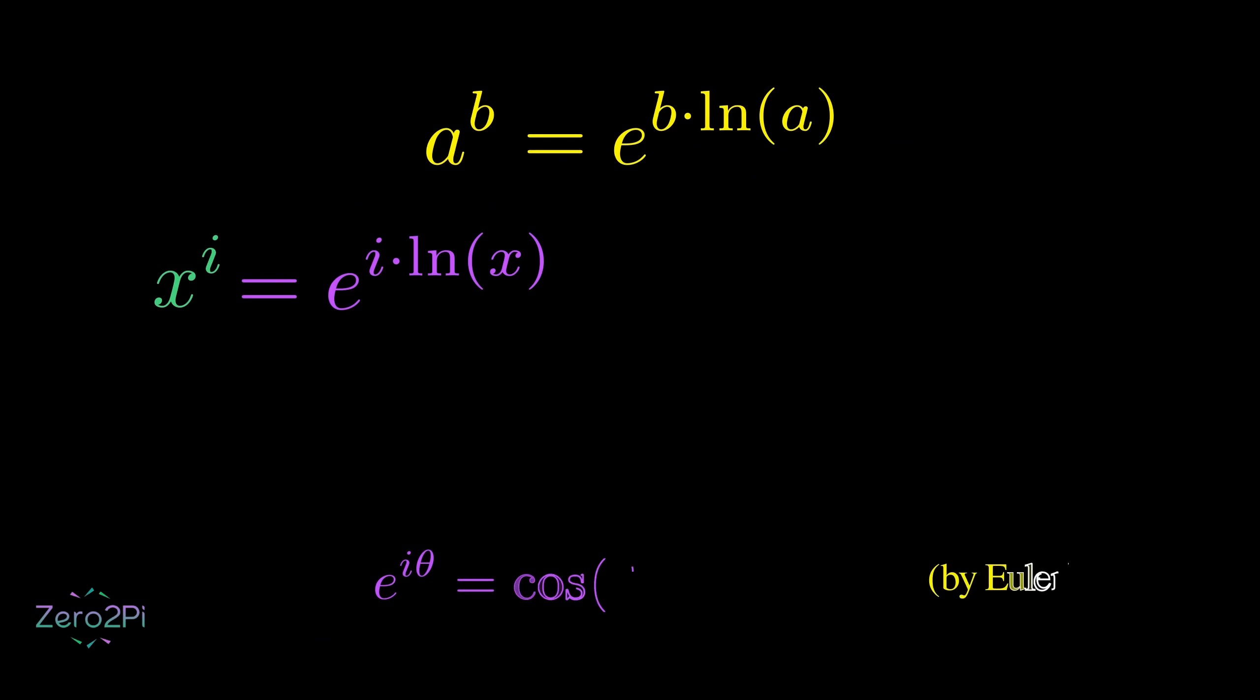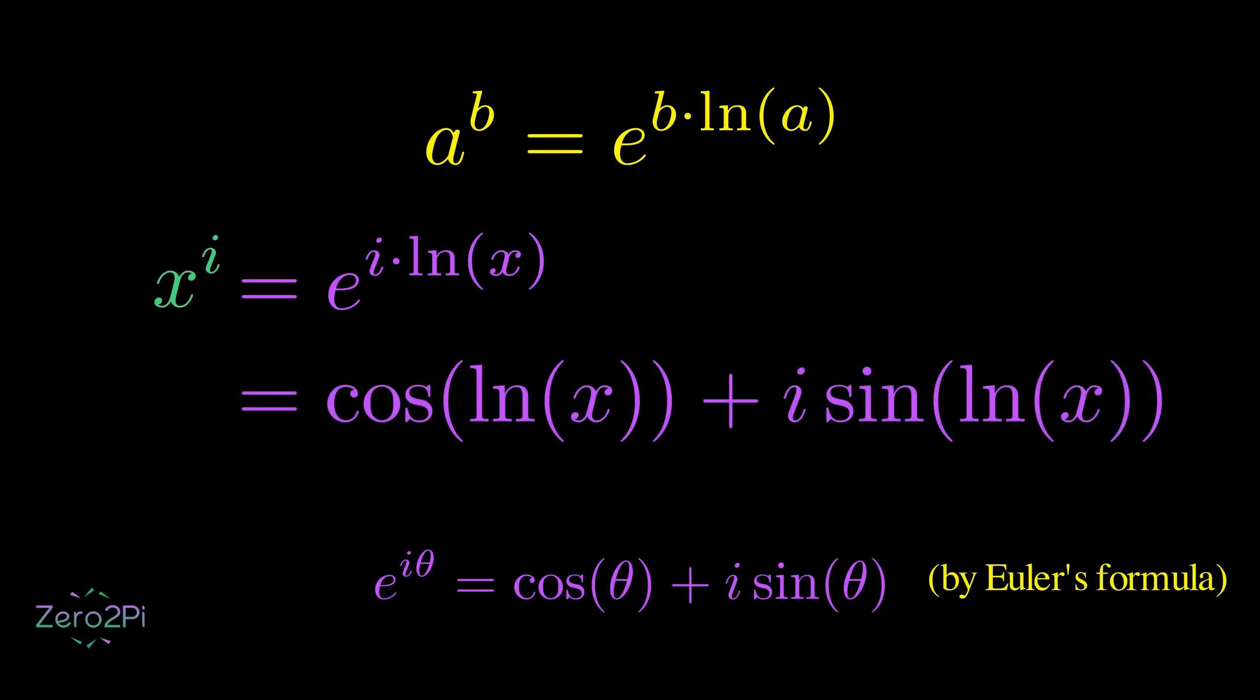Now we can use Euler's formula, which tells us that raising e to an imaginary power gives us a position on a circle using cos and sine. In our case, the angle theta is simply the natural log of x.